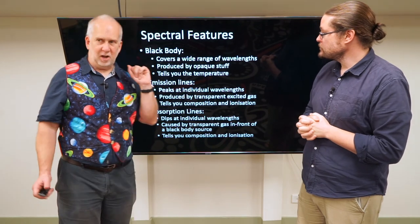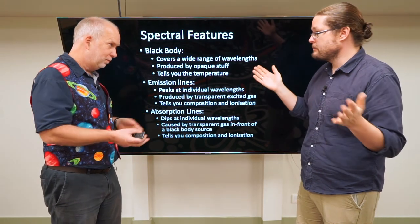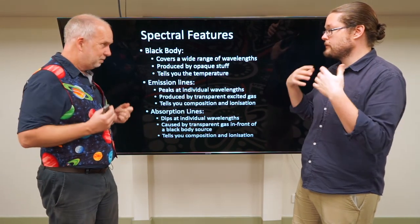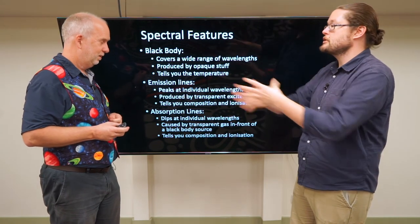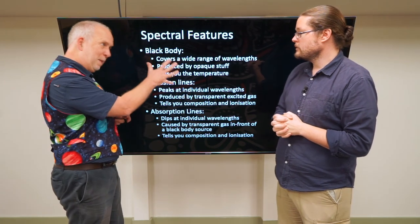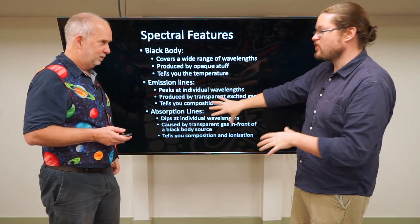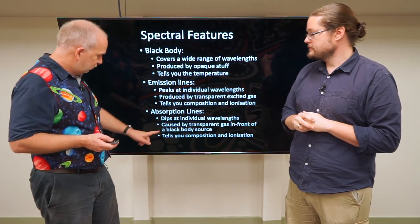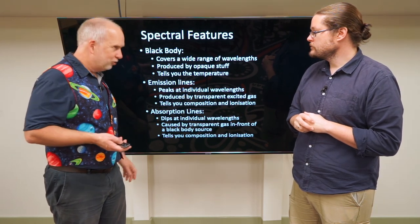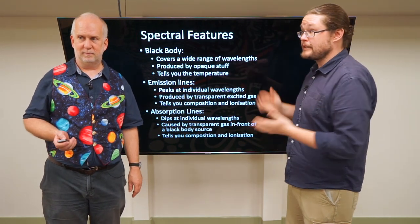So now we have our three spectral features. We have black body radiation — which comes from opaque things, covers a wide range of wavelengths, and tells us about temperature. We have emission lines — upward spikes from something emitting or transferring energy. And then we have absorption lines — dips — where you have a black body in the background, its light passes through some gas, and certain wavelengths are lost. The emission and absorption lines depend on what elements or gas are present. Black body just tells us temperature, but the lines can tell us the chemical composition, how ionized things are — so we can use this combination to determine what something is actually made of.